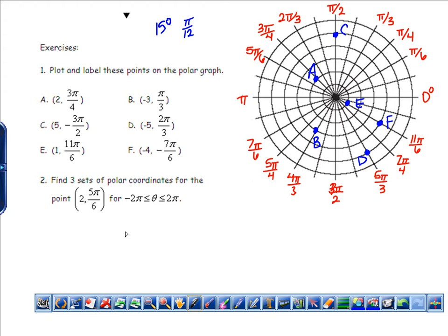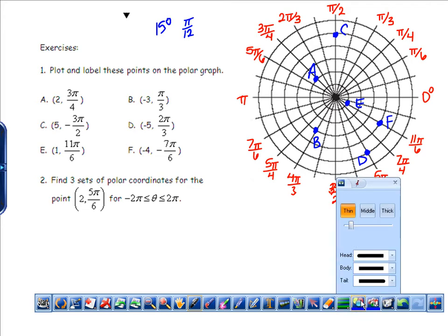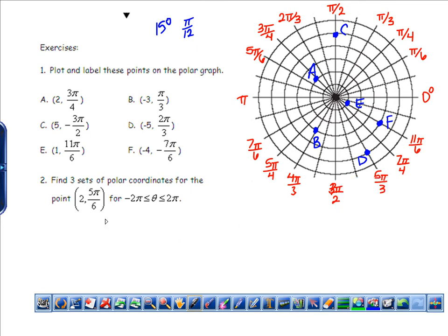Problem 2 says find 3 sets of polar coordinates for the point, and they want us to stay either in one revolution forwards or one revolution backwards. I'm going to switch up colors, and I'm going to first plot this point (2, 5π/6). It's a pretty basic point. It's right here. And you have some extra polar grids on the back of your timeline if you want to ever use those as well. And you can Google them and find them online and things like that.